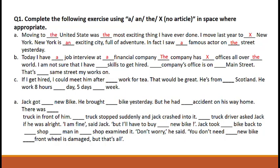'I am not sure that I have ___ skill to get hired.' Which article will come before 'skill'? 'The' will come because we are talking about particular skills which are required to get the job. '___ company office is on ___ main street.' Students, which article will come in these two blanks? 'The' will come before 'company' because we are talking about the company which is already mentioned. In the second blank, 'the' will again come because its location has been highlighted.